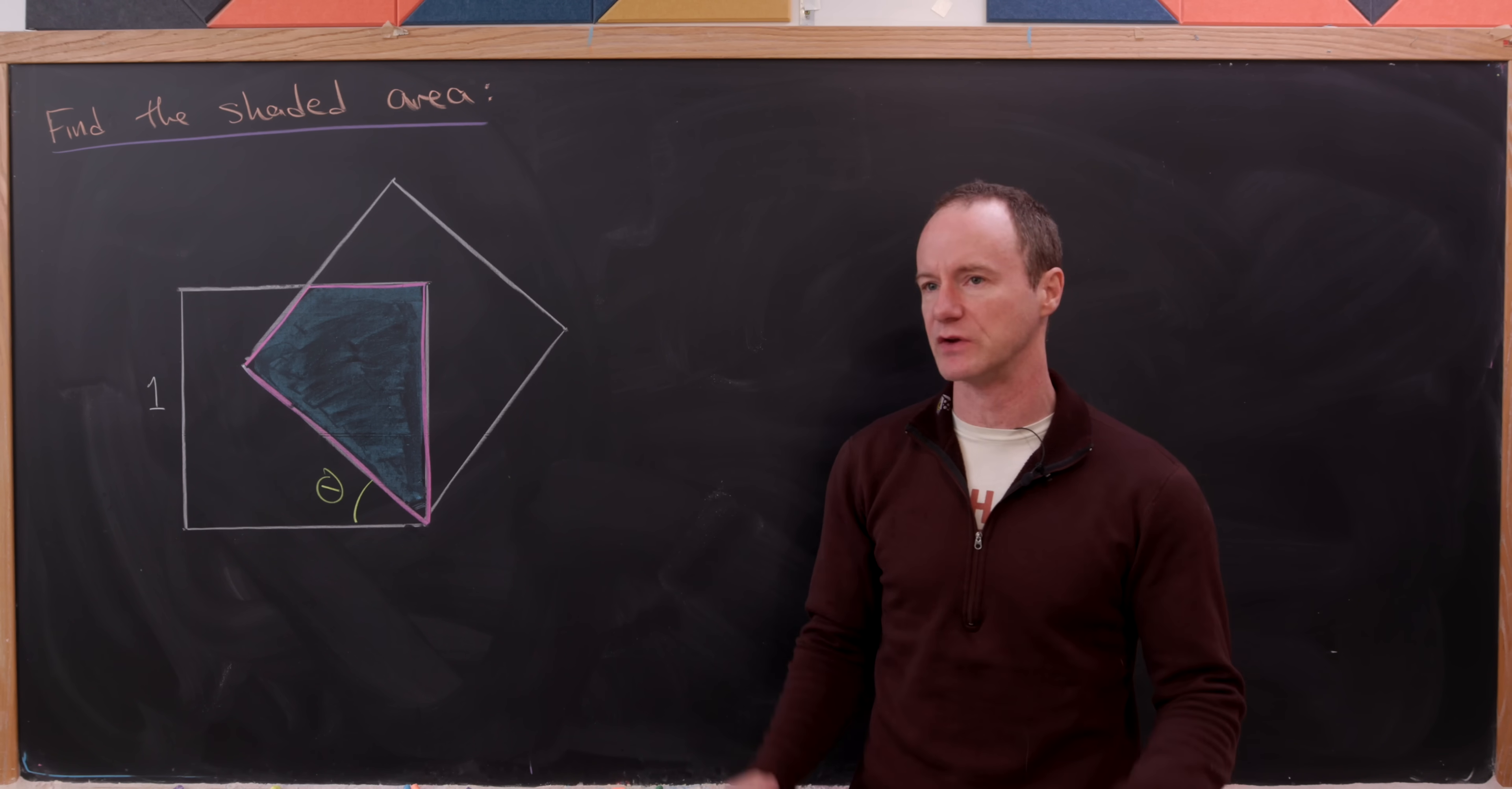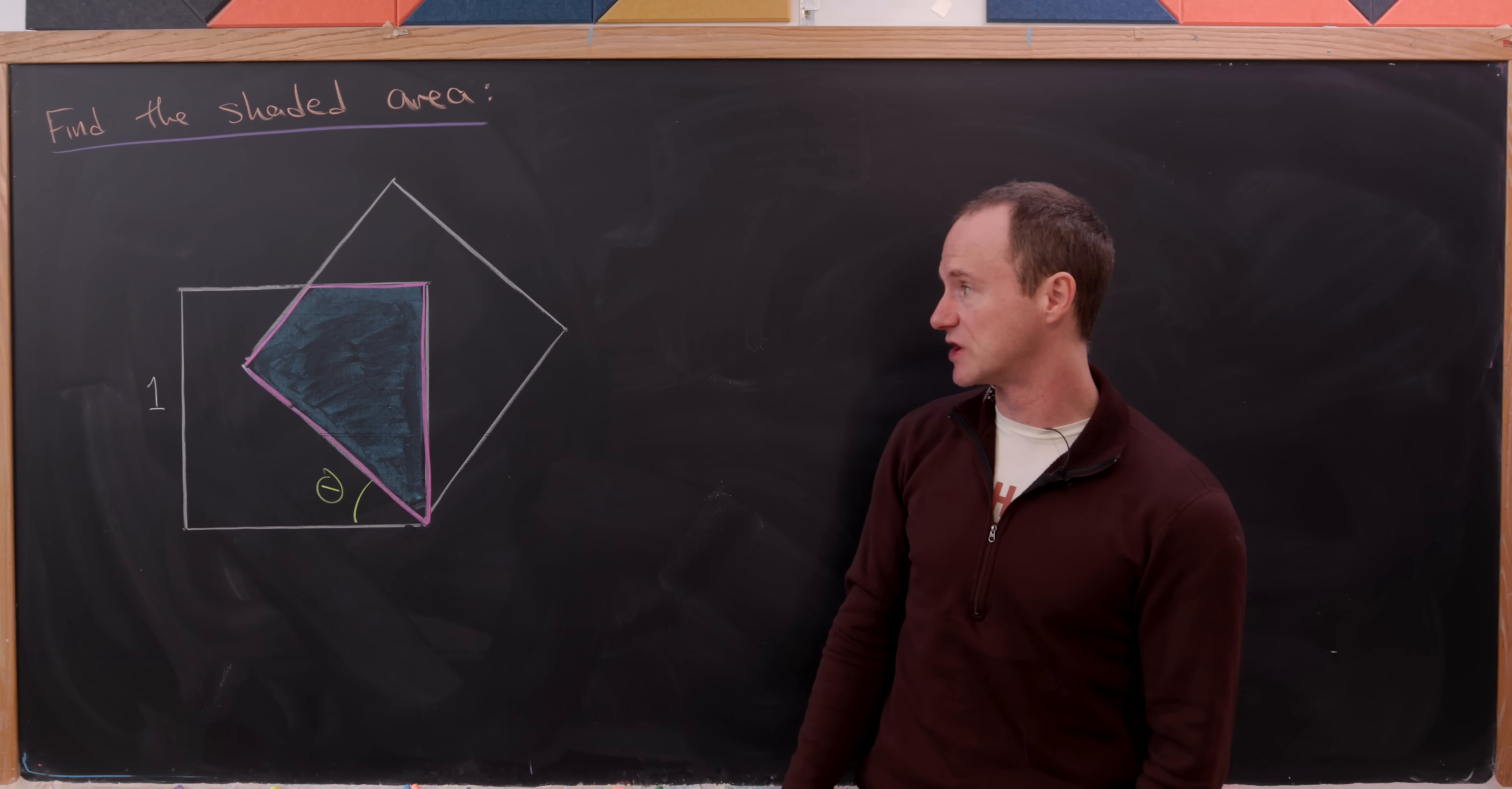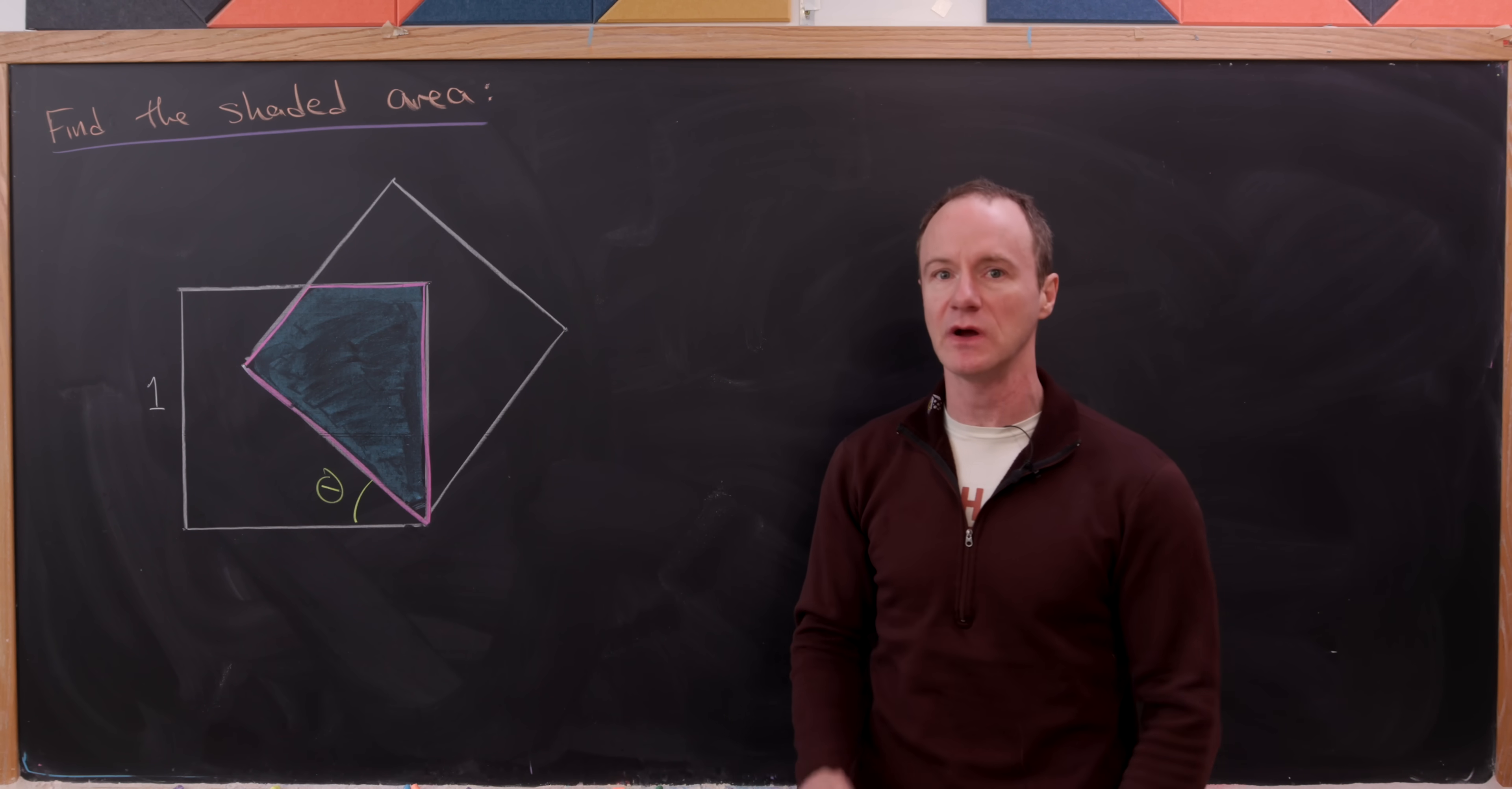I guess when we do the calculation we'll be doing theta radians. Then this creates kind of an obvious intersecting portion and our goal is to find the area of that intersected portion which I have shaded in blue and then outlined in this magenta color.